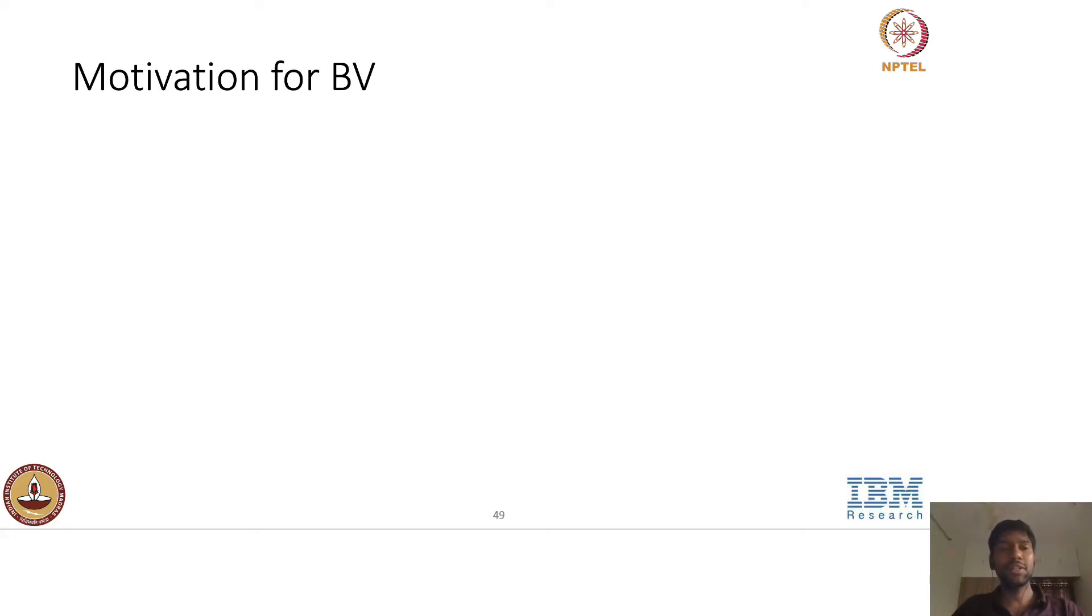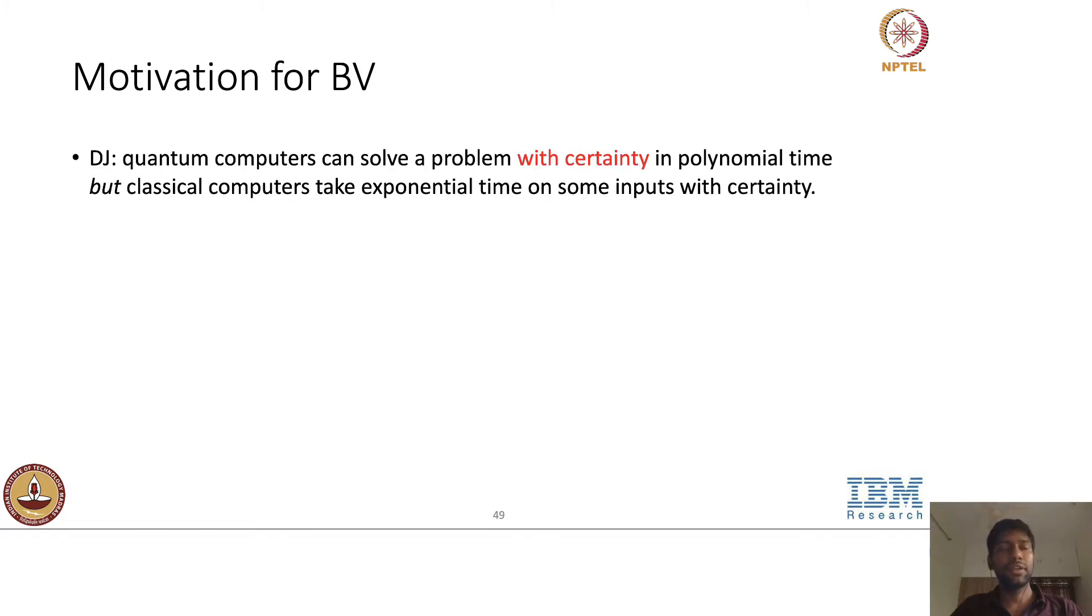So what did Bernstein and Vazirani start with? We saw that Deutsch-Jozsa proves that quantum computers can solve a particular problem with certainty, 100% confidence in polynomial time, but classical computers have to take exponential time if they want to solve for all the inputs with certainty. So for some of the inputs with certainty, they need exponential.